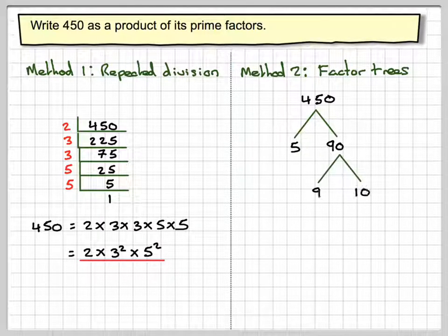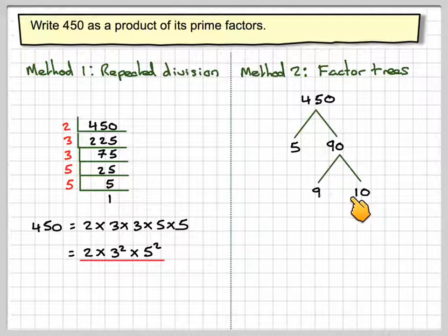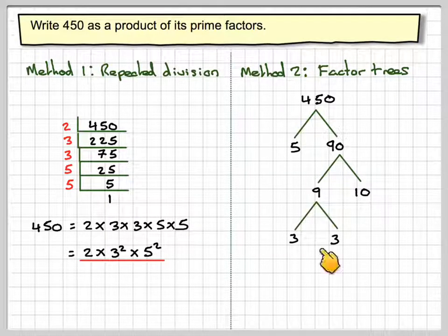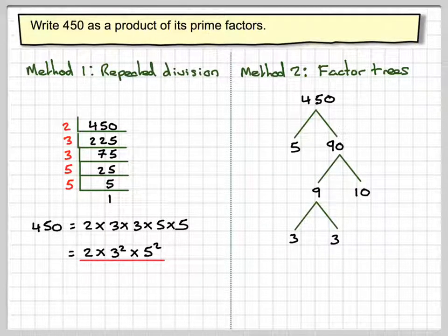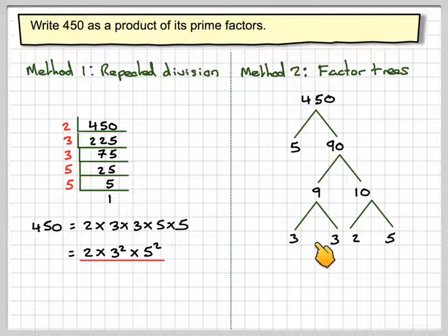At 90 we do nine times ten. Neither of these are prime numbers so we don't stop there. So we look at nine, so nine will become three times three and then ten is two times five. Now they're all prime numbers so we stop.